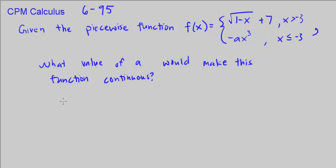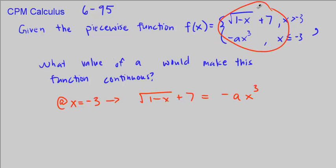So that means at x is equal to negative 3, square root of 1 minus x plus 7 equals to negative ax cubed. These two pieces have to equal each other, and that will make our function continuous.